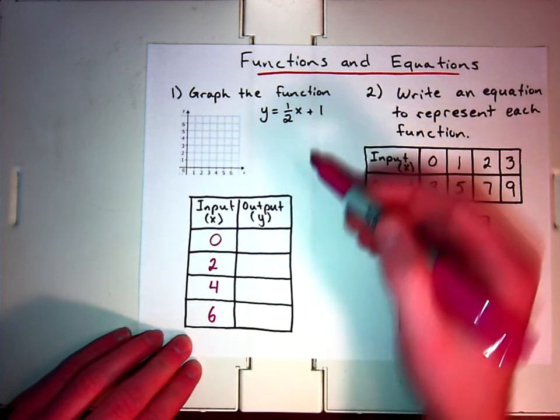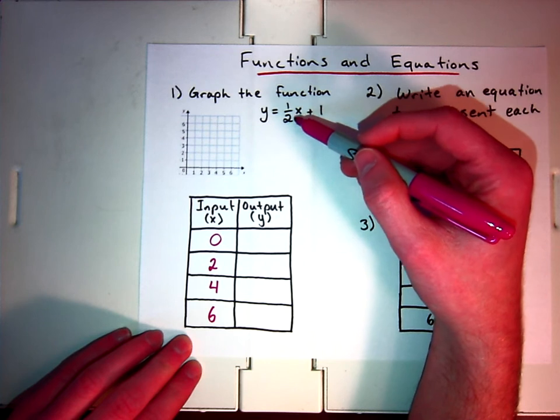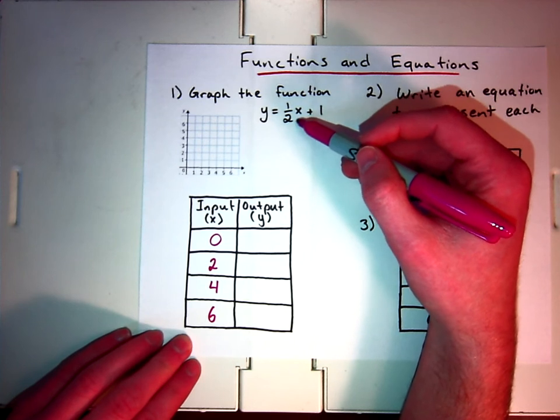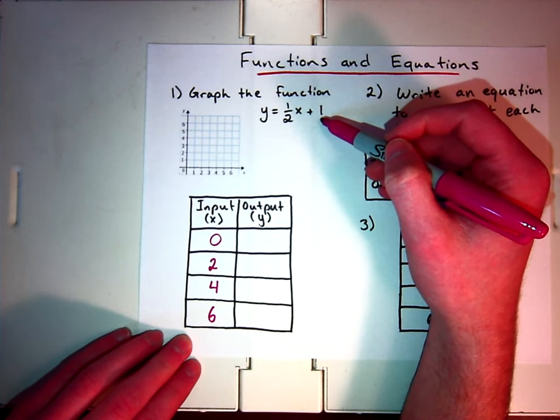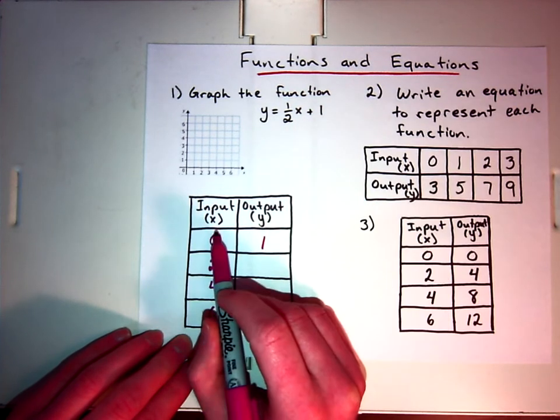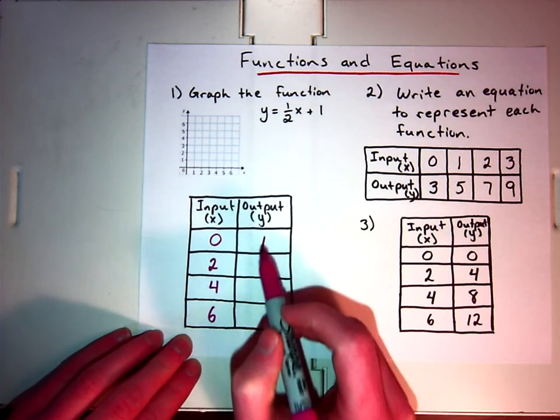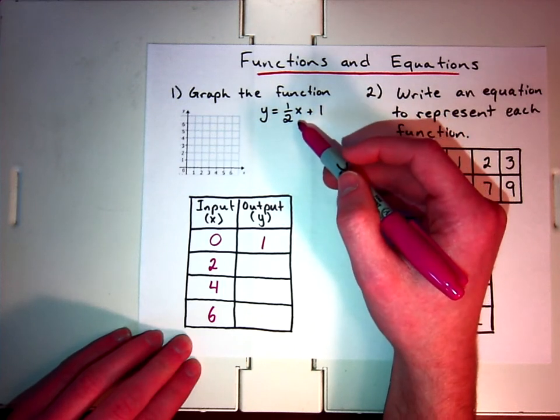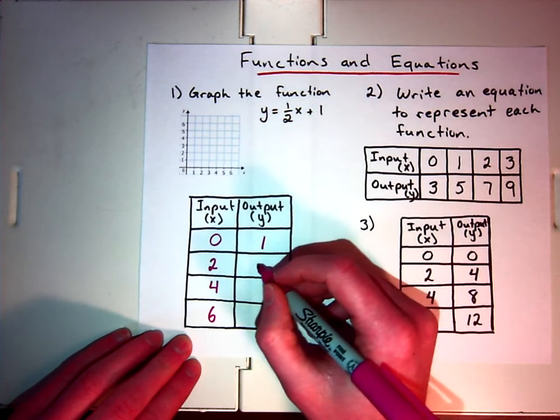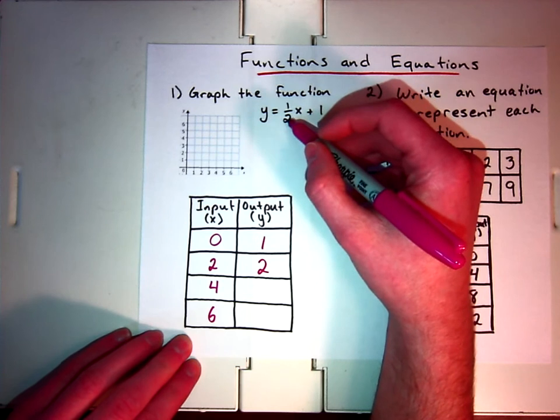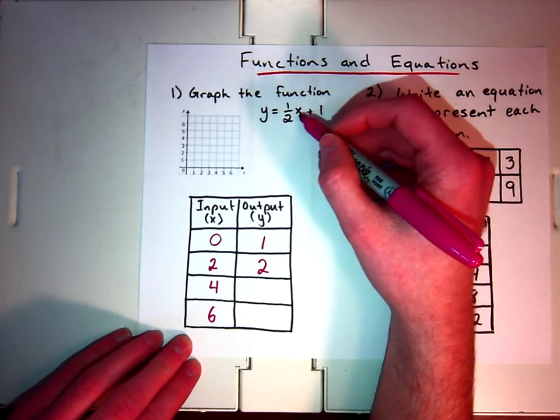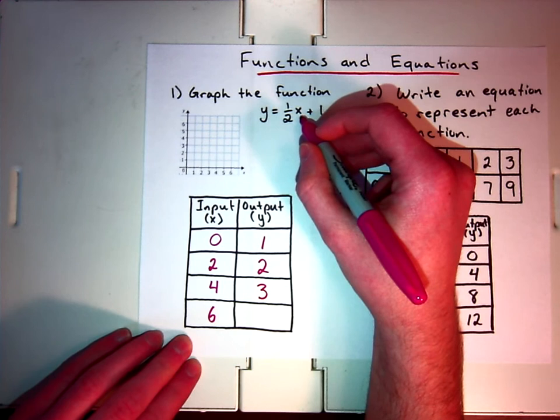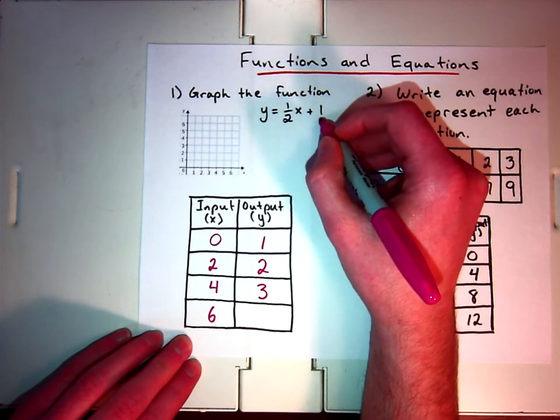Well, let's solve this out. When I plug in 0 for x, it's going to be one-half multiplied by 0. Well, one-half times 0, any number times 0 is 0. And then we have to add 1. So 0 plus 1 is 1. So when we have the input of 0, we have an output of 1. Let's take 2. Let's do one-half times 2. Well, one-half of 2 is 1. So 1 plus 1 is 2. Let's try 4. One-half times 4 is 2. So 2 plus 1 is 3. For 6, one-half times 6 is 3 plus 1 is 4.